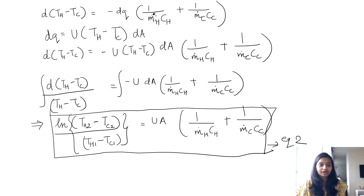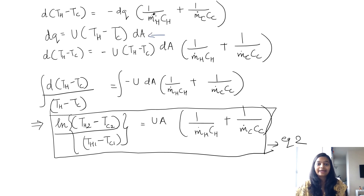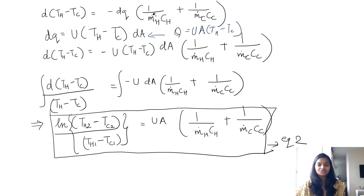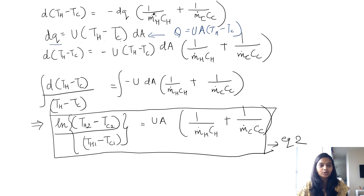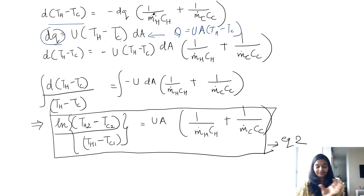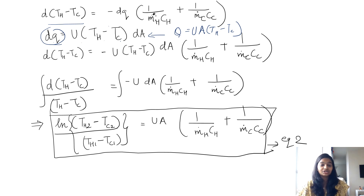Going into further derivation, we know that the particular heat transfer at every point, based on convection, is the overall heat transfer coefficient times the temperature difference between the two points. So at every single point, delta Q is equal to U times (TH minus TC) times delta A. Substituting DQ into our previous equation, we find that the temperature difference equals U times the overall temperature difference times dA times (1 over MH CH plus 1 over MC CC).